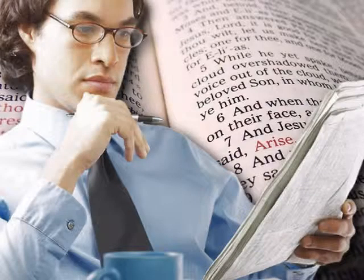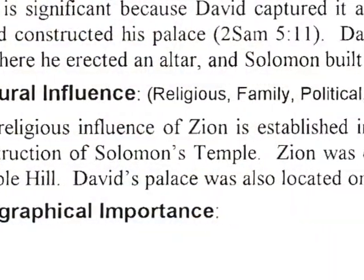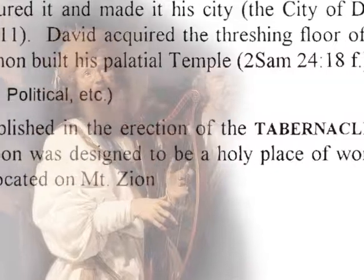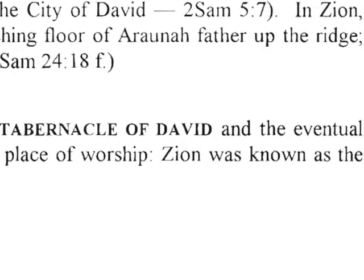When you read the articles about your study topic, seek to establish the reason why your study topic had scriptural significance. You might record cultural influences similar to this example: the religious influence of Zion is established in the erection of the Tabernacle of David and the eventual construction of Solomon's temple. Zion was designed to be a holy place of worship, known as the Temple Hill. David's palace was also located on Mount Zion. Without the Tabernacle of David and the presence of the Ark of the Lord, the influence of Zion would have been limited to the location of David's royal palace.